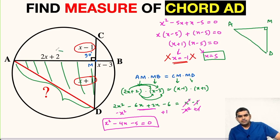So AM, this length is 2X plus 2. Let us substitute 5 in place of X. So this will be 5 times 2, 10 plus 2, 12 units. Likewise, MD is X plus 1. So this will be 5 plus 1, 6, and AD is unknown.